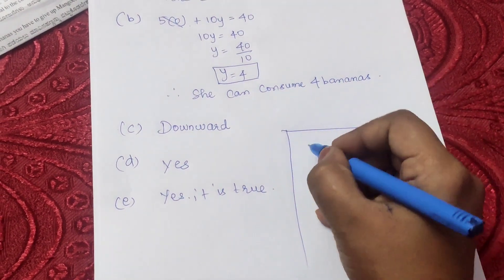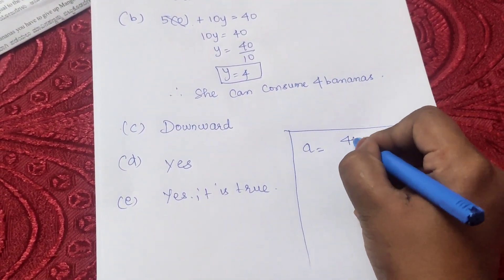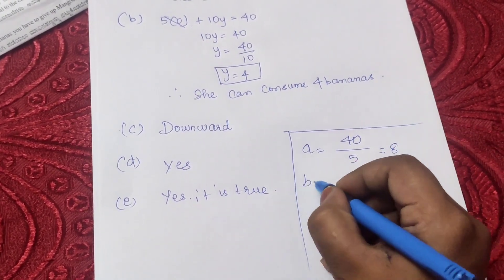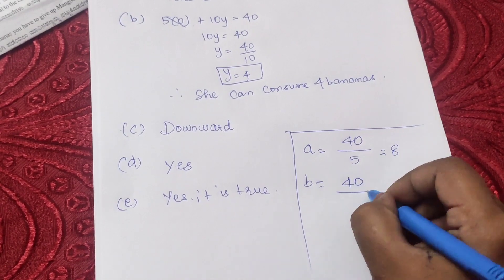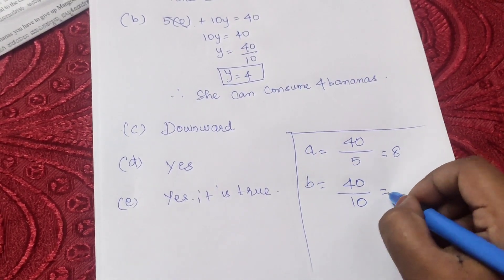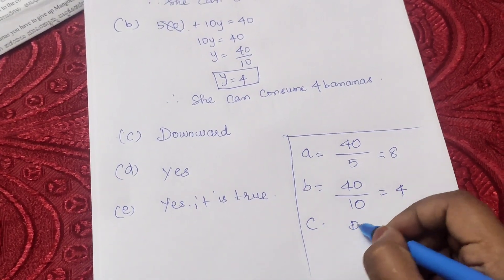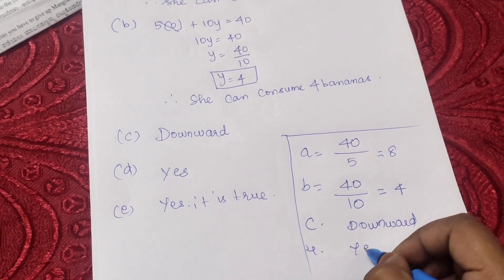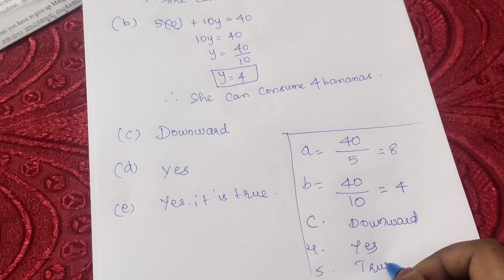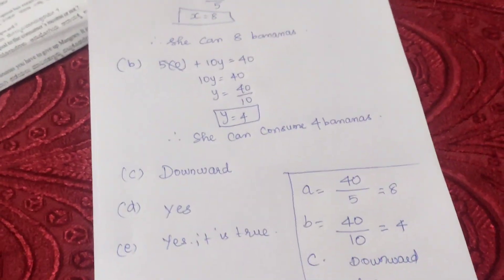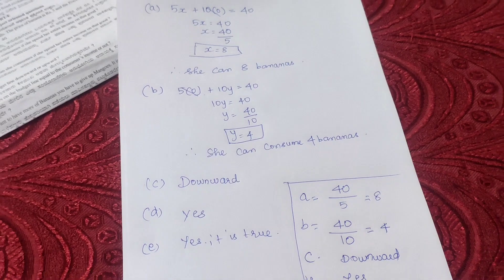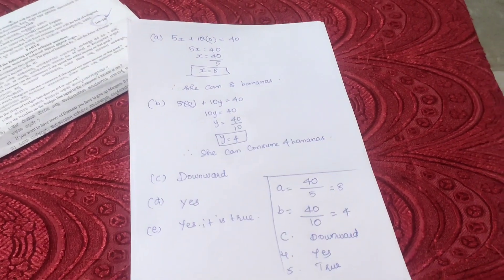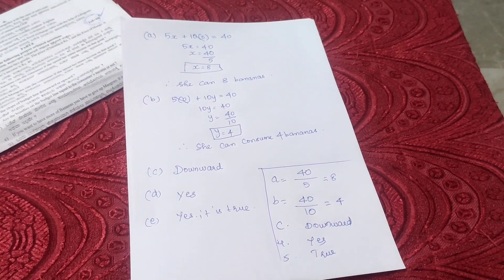If you find this calculation difficult, go for the shortcut method. The shortcut method: (a) is income divided by banana price = 40/5 = 8; (b) income divided by mango price = 40/10 = 4; (c) downward; (d) yes; (e) true. If you write this, you will get good marks — this is the way to do the first sum and you can easily get 5 marks.